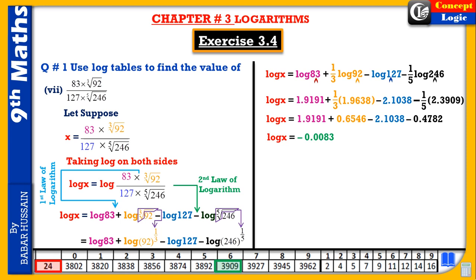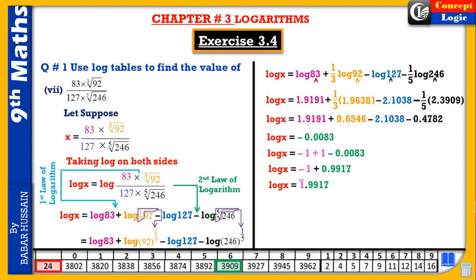Since log has come in negative form, we cannot find the antilogarithm of a negative number directly. So we must make it positive. The characteristic can be negative but the mantissa cannot. To make it positive, we add and subtract 1: the characteristic becomes minus 1 (written with bar notation), and 1 minus 0.0083 gives 0.9917 as the mantissa. So log x = -1̄.9917.